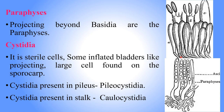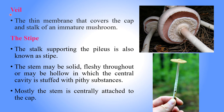Paraphysis are located next to the basidium. Cystidia are a kind of sterile cell — they are inflated, bladder-like in shape, and may be large cells found on the sporocarp. Cystidia cells may be present inside the pileus or stalk. In the pileus, this type of cell is called phyllocystidia; in the stalk, it is called caulocystidia.